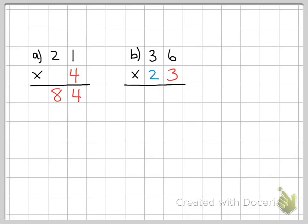Now if we take a look at question B, we're now multiplying by a 2-digit number at the bottom.